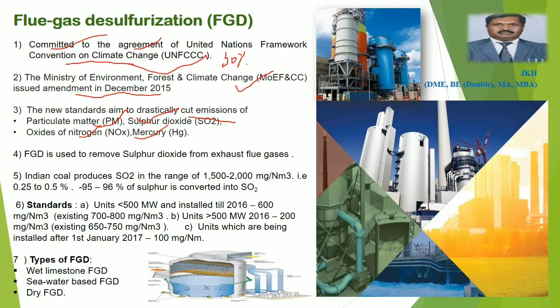The most efficient technological solution to achieve this objective is definitely FGD, i.e. Flue Gas Desulphurization. It is a set of technologies used to remove the sulfur dioxide from the exhaust flue gases of the fossil fuel power plant.